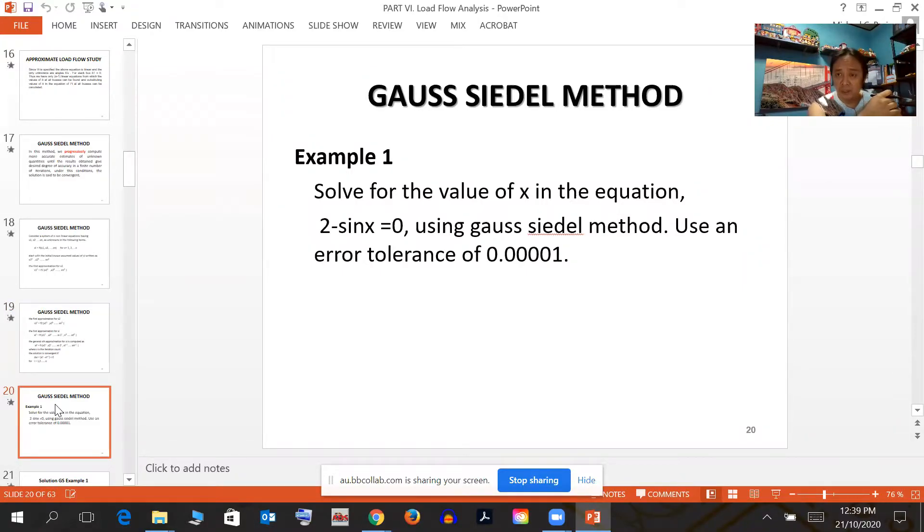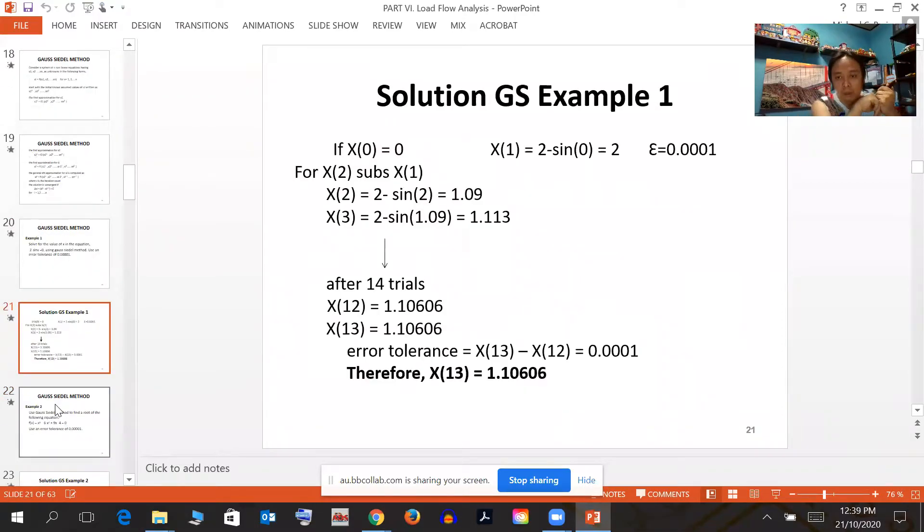From the first approximation, you can get the first iteration in terms of a function of the initial variable. Then substitute that into the second iteration, then the third, fourth, fifth. The process is the same if you involve programming, especially MATLAB.